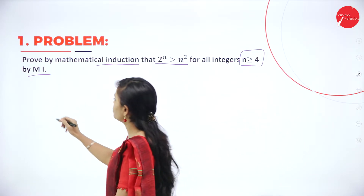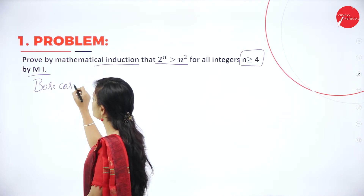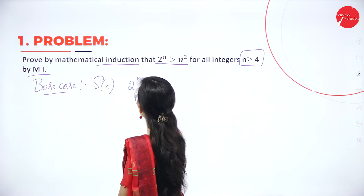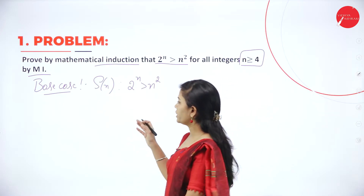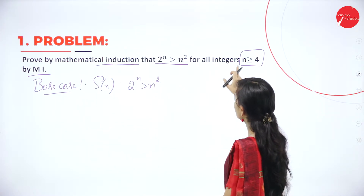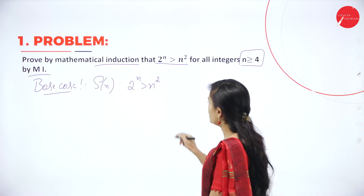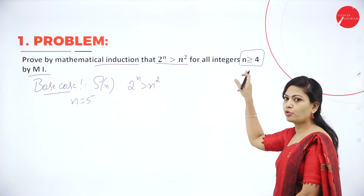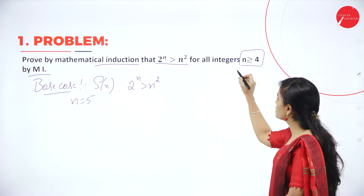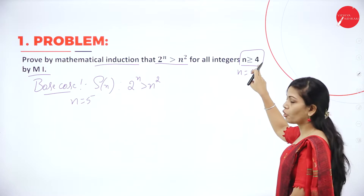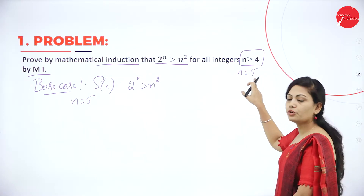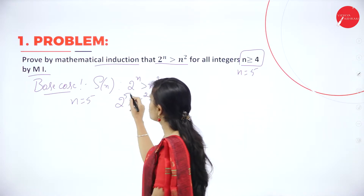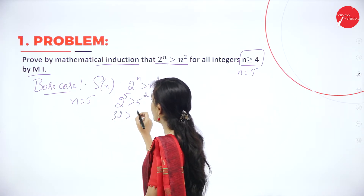So what is the first step? First we have to find the base case or basis. In the basic case you have to prove that n is true. So s of n is such that 2 power n is greater than n square. Now instead of giving n equal to 1, because here they have mentioned integers n is greater than or equal to 4, I will give n equal to 5 — the smallest possible value which is higher than 4.